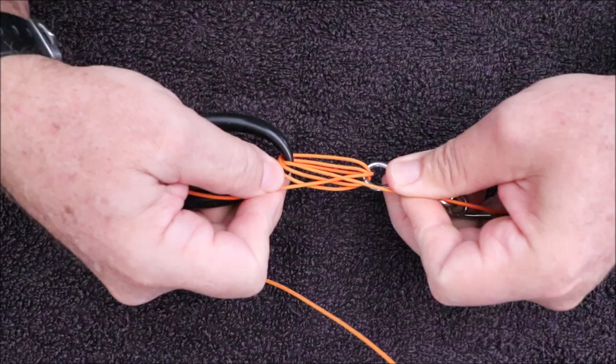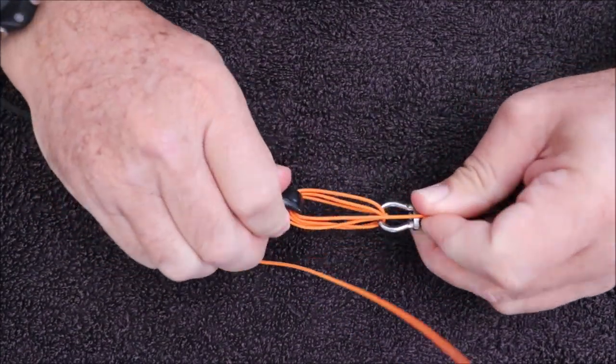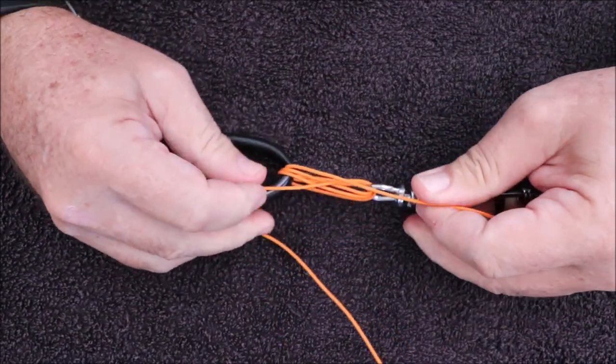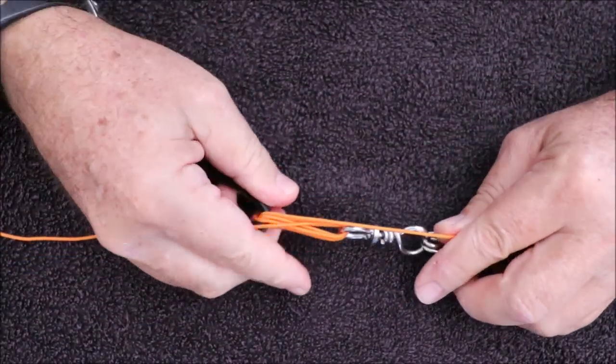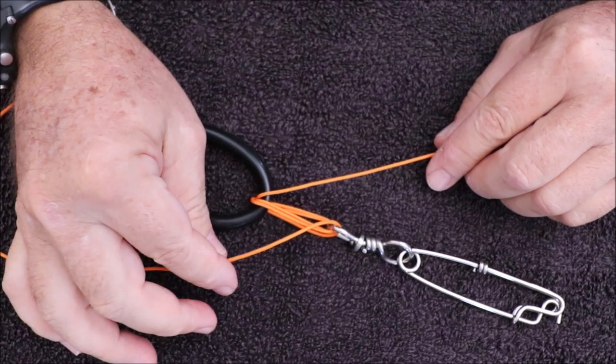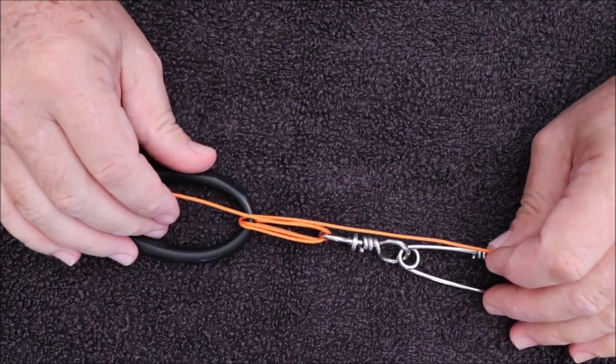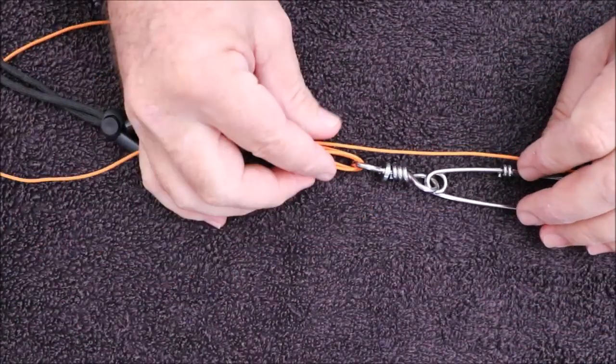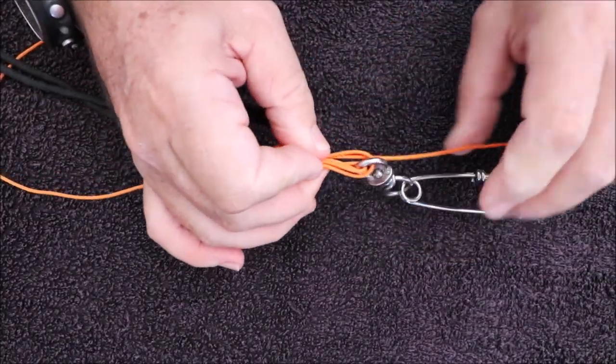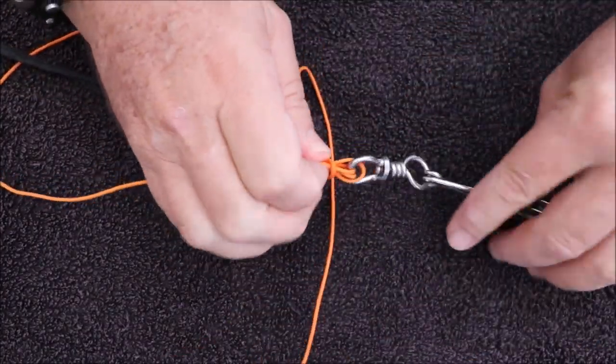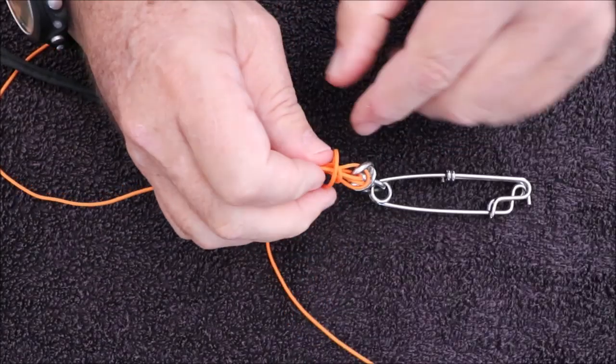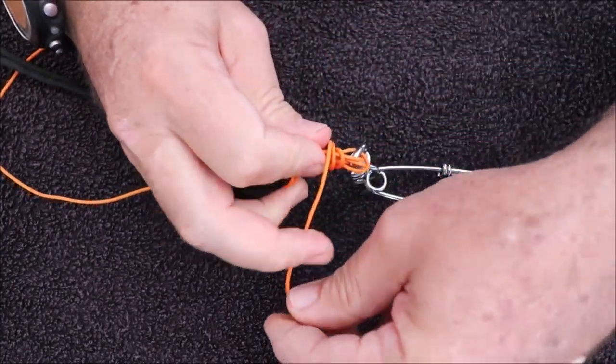You can make this longer or shorter just by pulling on it. To start it off, start with any one of the loose tag ends, pinch the middle together, then wrap about three times. Two will work, three is adequate. I'll do three here.